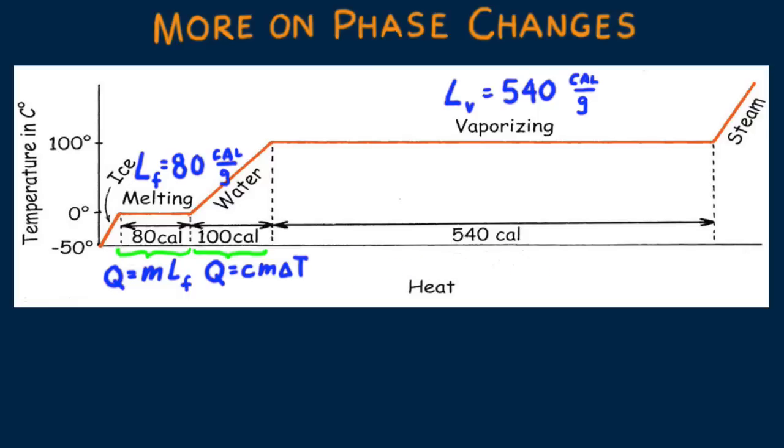For example, twice the mass of water heated through the same temperature range would require twice as much, 200 calories. And turning 100 degree water to steam we get 540 calories.